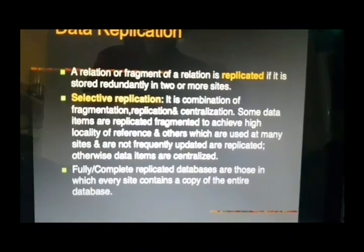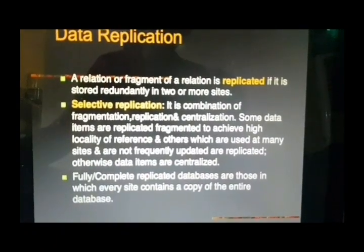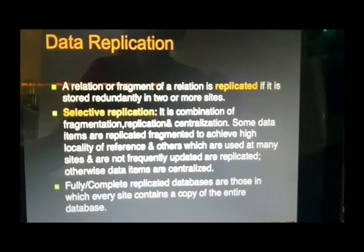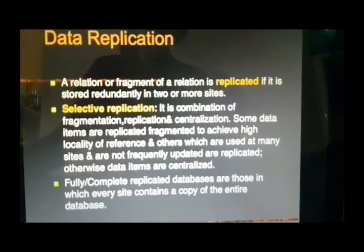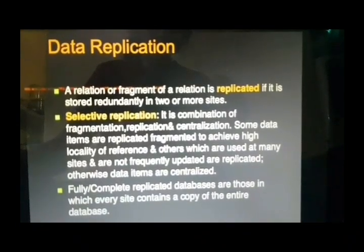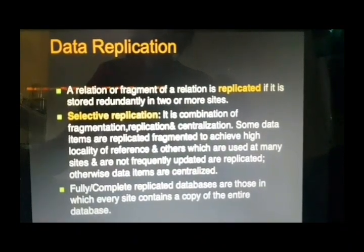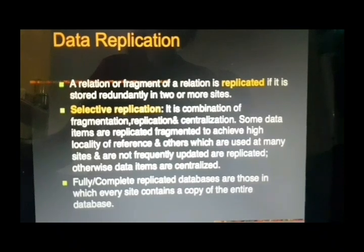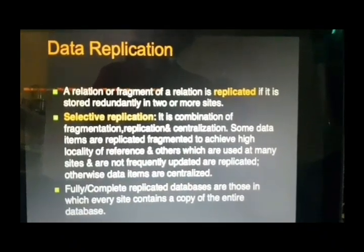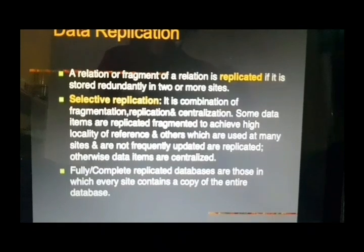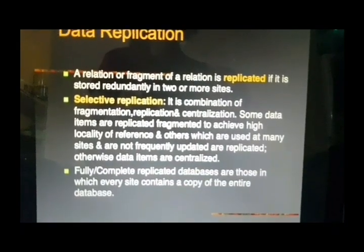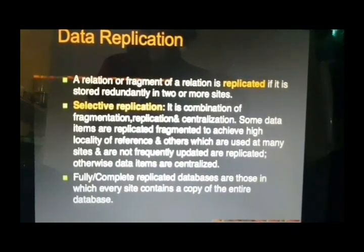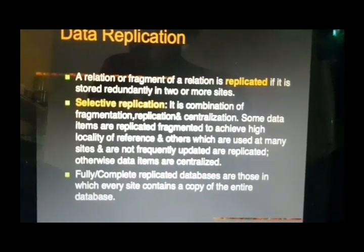One of the replication techniques is selective replication. Selective replication is a combination of fragmentation, replication, and centralization. Some data items are fragmented to achieve high locality of reference, and others which are used at many sites and are not frequently updated are replicated. Otherwise, data items are centralized. Selective replication means only some part — select the data that is frequently needed and frequently accessed — is to be replicated at the sites wherever it is needed.